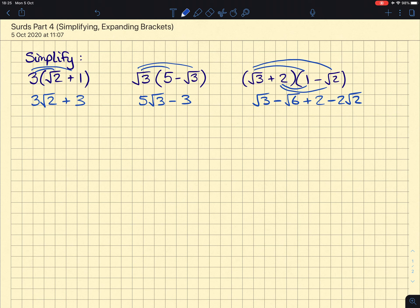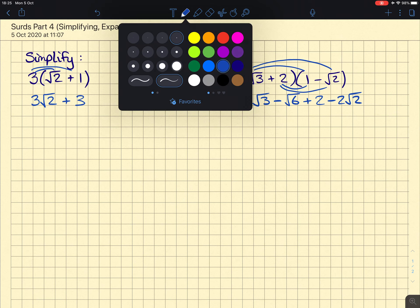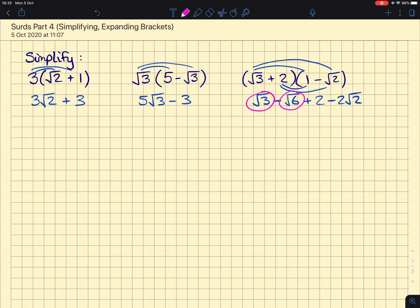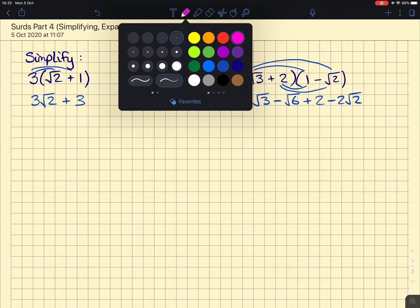There's nothing more we can do here, because the surds that we have, root 3, root 6, and the root 2, none of them can simplify. But you would always want to make sure that the surds you end up with, you would double check to make sure they can simplify.